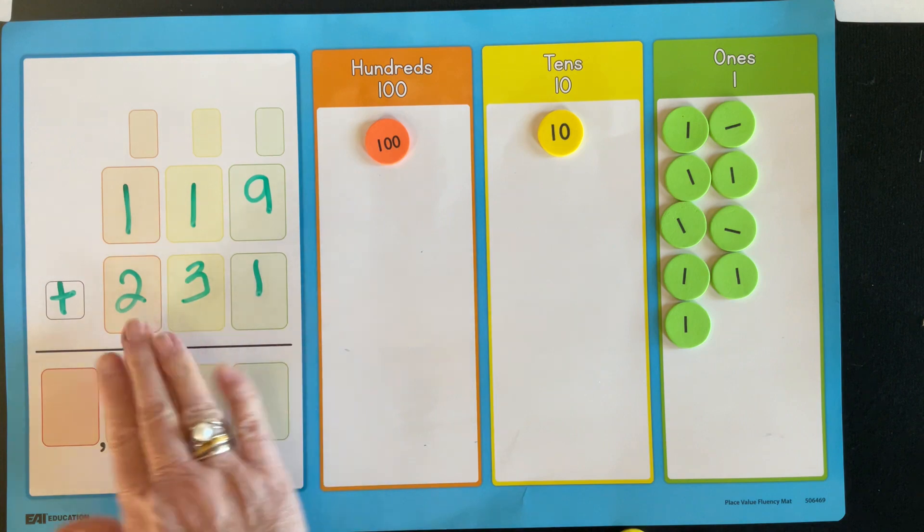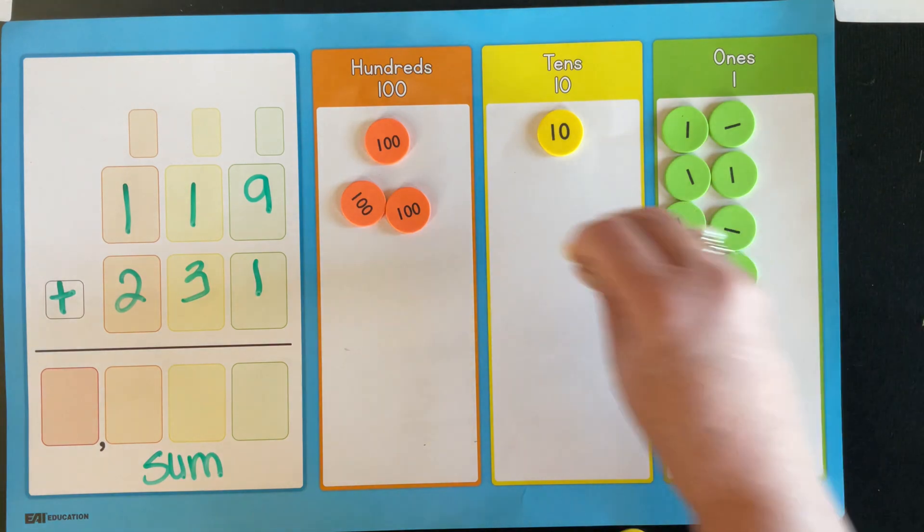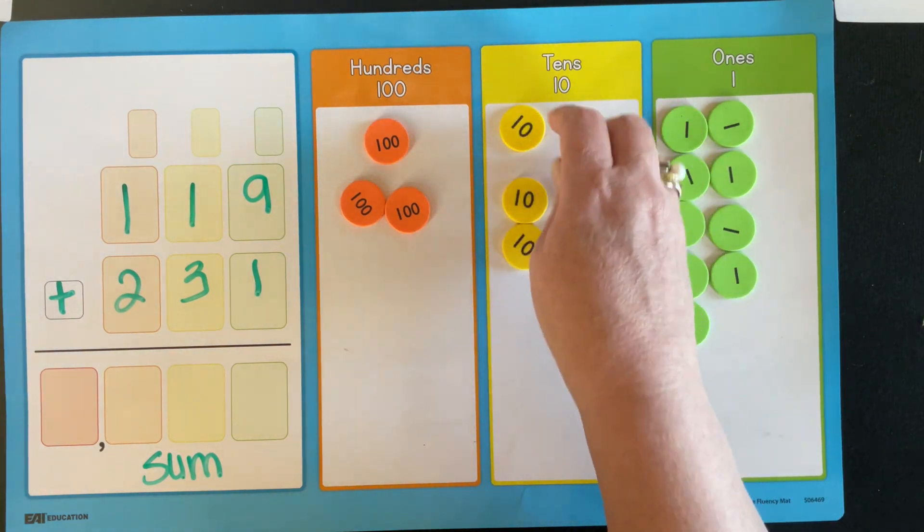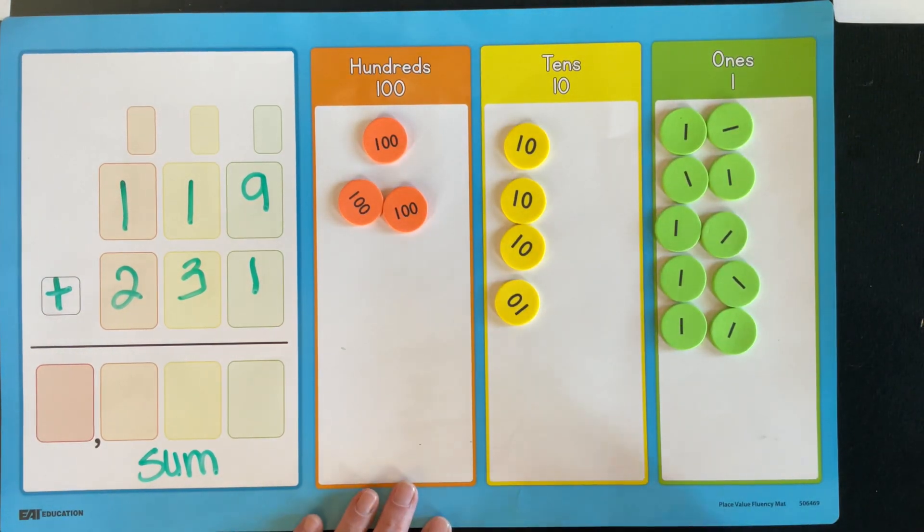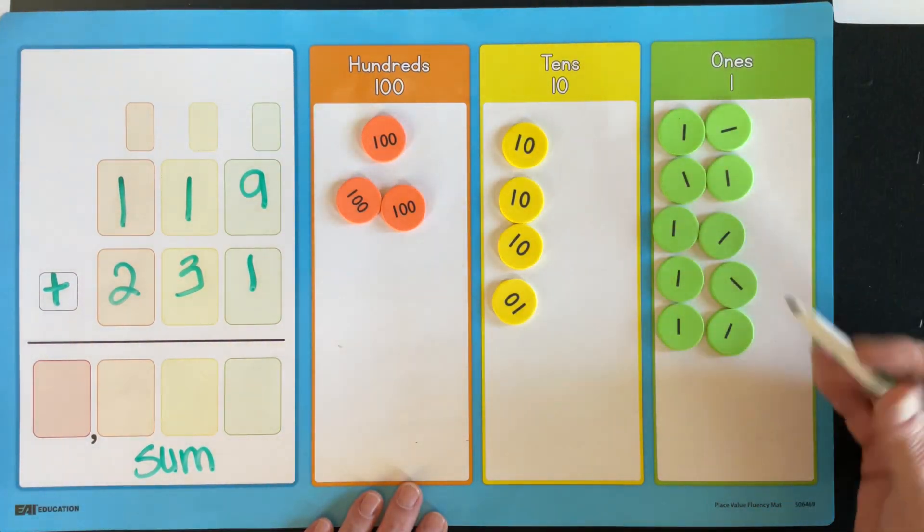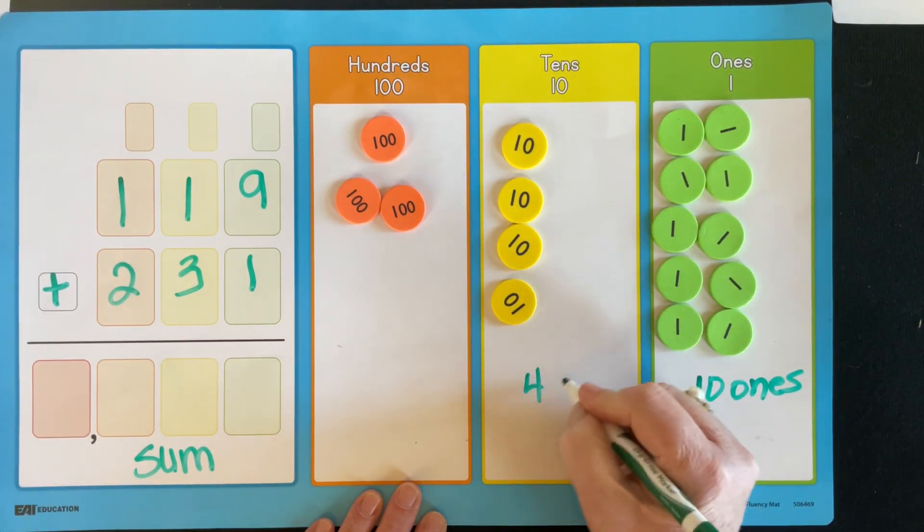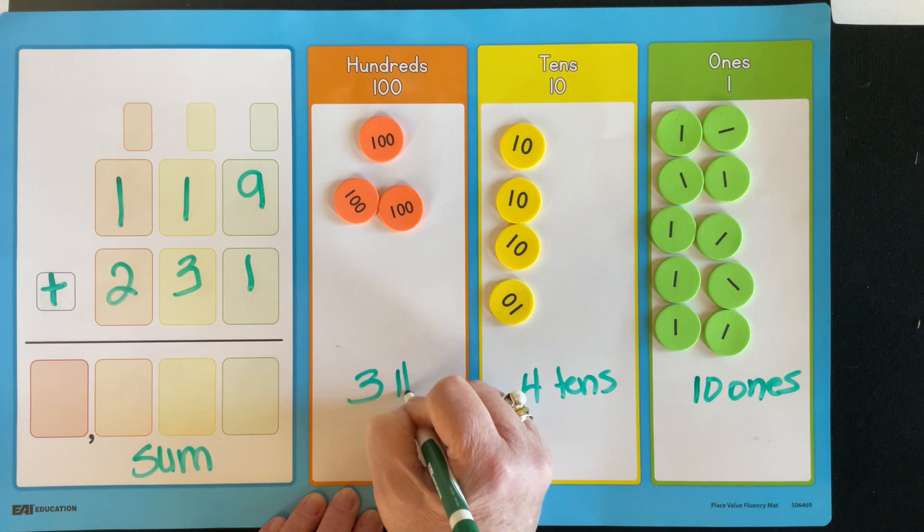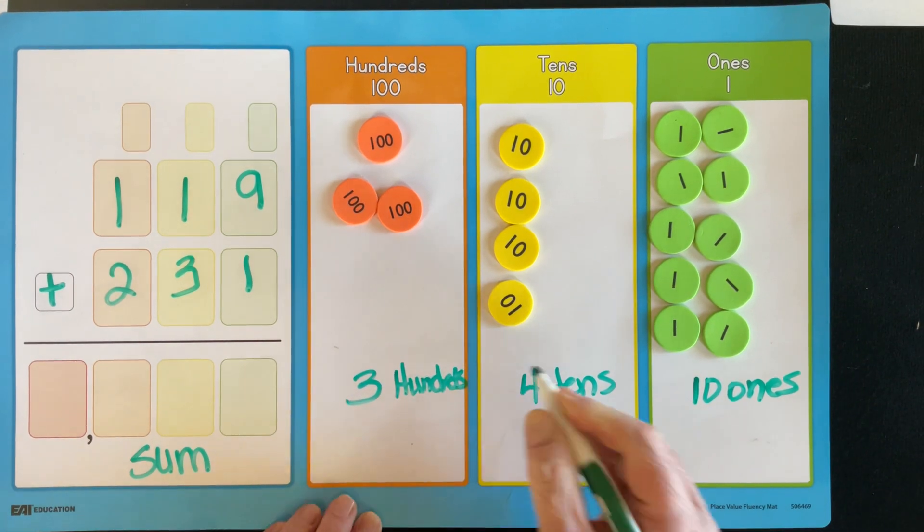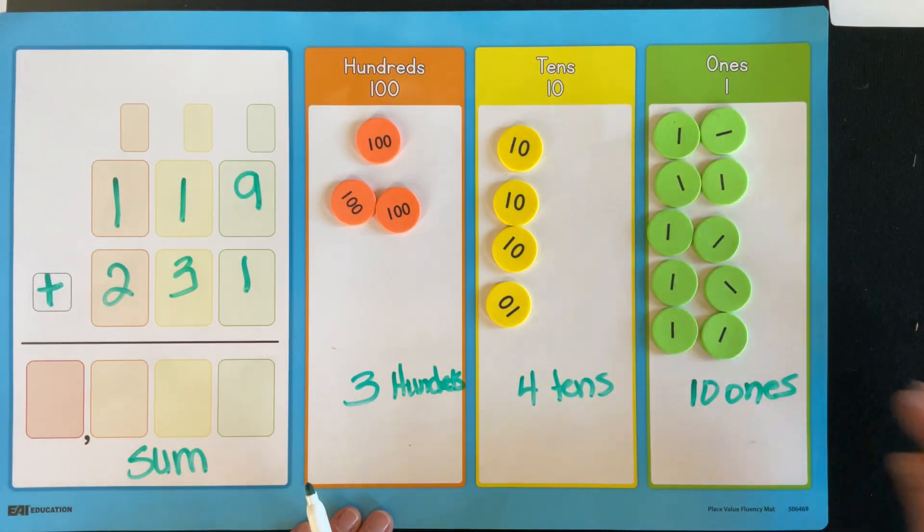And we're now going to add that to this addend, which is two more hundreds, three more tens. And kids will put these anyway on here. And one more one. If you're going to column add, which is traditional algorithm, we're going to add over here. And I go ahead and have the kids write down 10 ones. How many tens do you see? Four tens. How many hundreds do you see? Three hundreds.